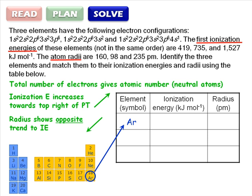2 plus 2 plus 6 plus 2 equals 12 electrons, and atomic number 12 is magnesium.